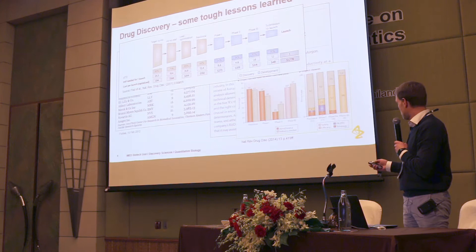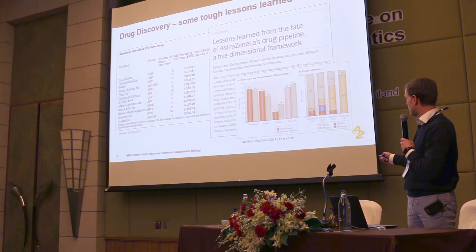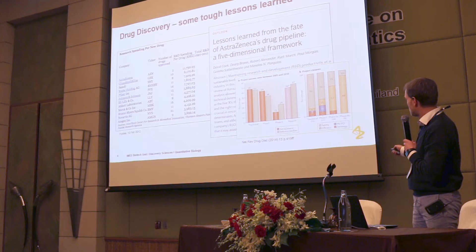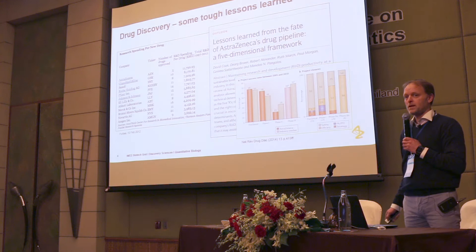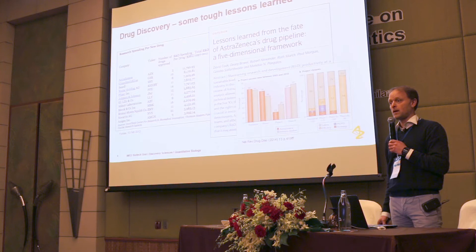Within AstraZeneca, we have analyzed our own internal drug projects, and that has been published in Nature. There's an image showing reasons for failure at different stages — the beige color represents safety across preclinical, phase 1, phase 2a and 2b — and then later on the main reason for failure is efficacy. So we went through many of our old drug projects and looked for the different reasons and tried to tackle those problems.